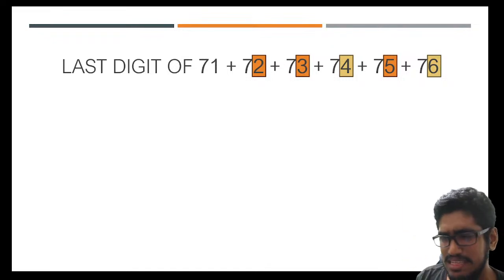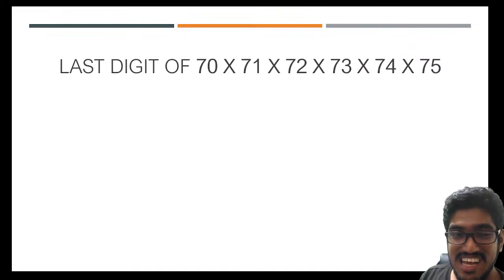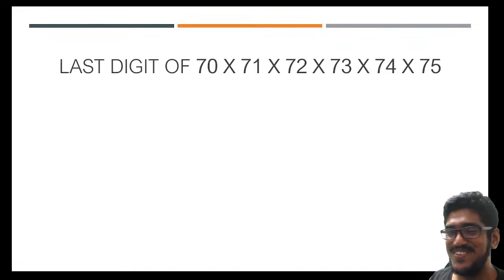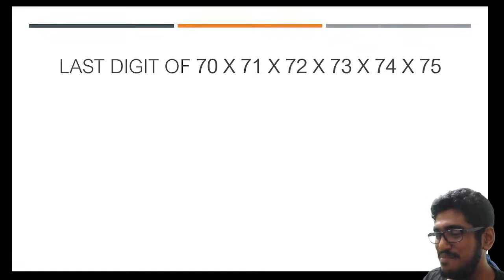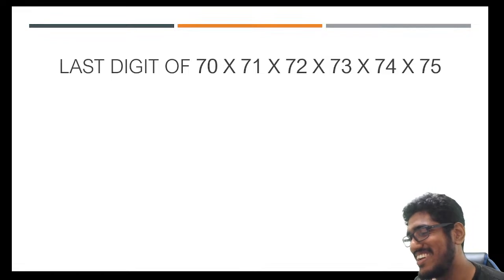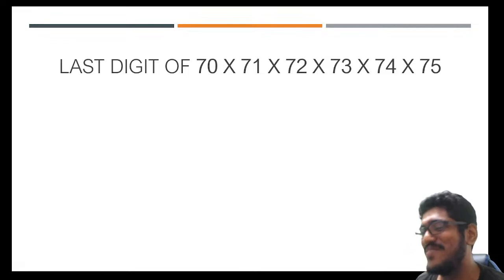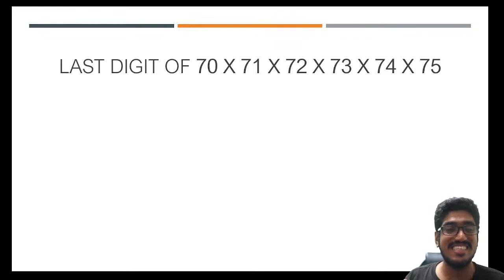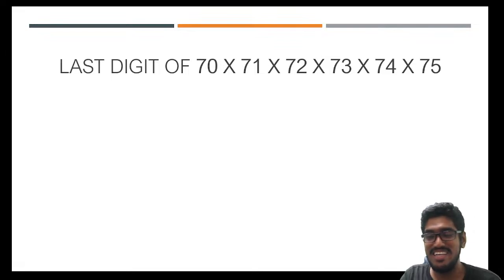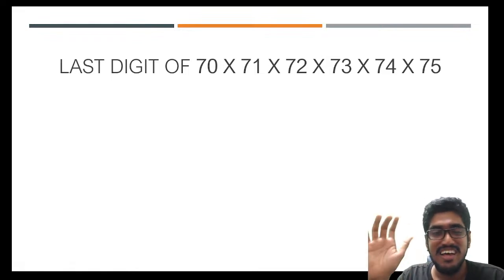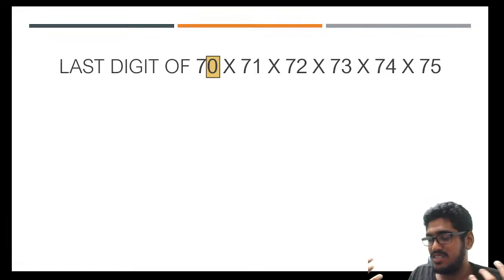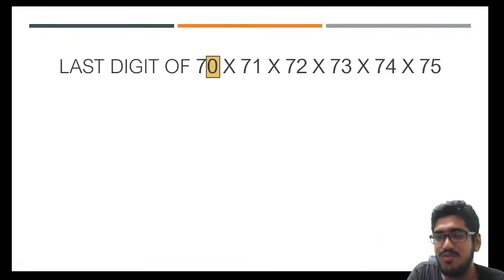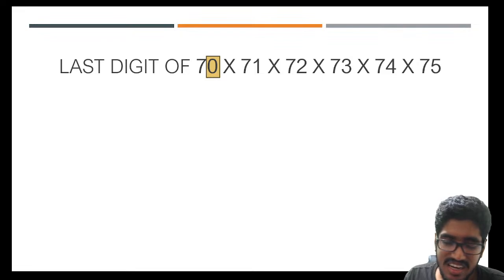I'm in the business of complicating things, so let's complicate our math. What is the last digit of 70 × 71 × 72 × 73 × 74? It's a pretty big number, but I'm only asking for the last digit. All of you are right — it is zero, because 70 ends in zero and multiplying any number by a number ending in zero gives a last digit of zero. Look how scary the numbers look, but if you focus on just the essential information you get the answer quickly.